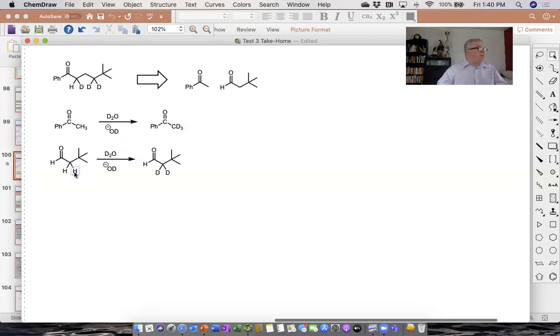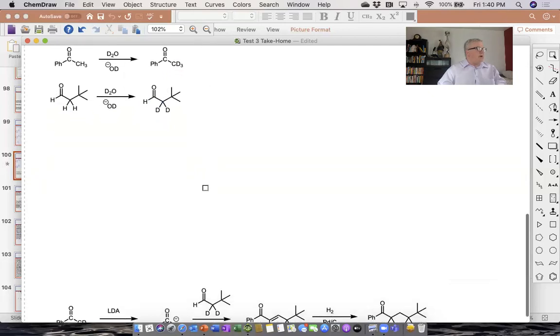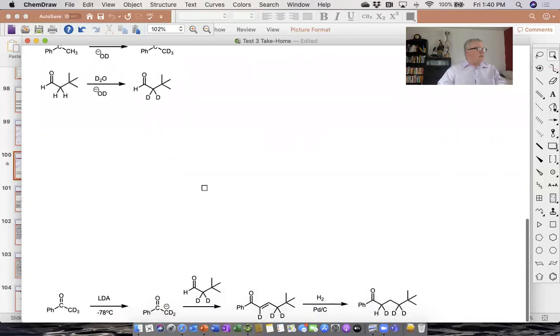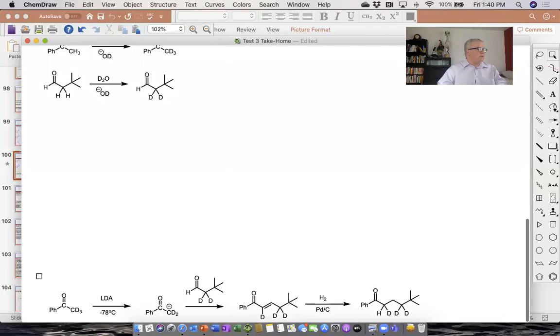We can do the same thing with our aldehyde. Notice that we exchange the protons on the alpha carbon. We do not touch the aldehydic carbon. That will remain a regular hydrogen atom. It won't be a deuterium. So once we do that, we can go ahead and do the rest of our synthesis, which is pretty easy.